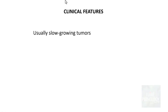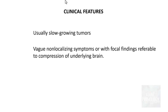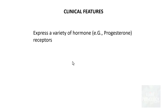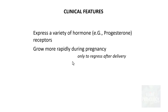Meningiomas are usually slow-growing tumours, and although the majority are benign, symptoms are often vague and non-localizing, with focal findings due to compression of the underlying brain. Patients commonly present with headaches, weakness, and seizures as a result of brain parenchyma compression. Meningiomas often express hormone receptors, for example progesterone receptors, which is why they grow very rapidly during pregnancy and regress quickly after delivery.